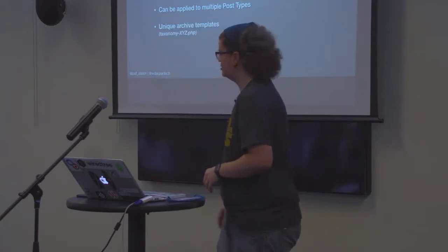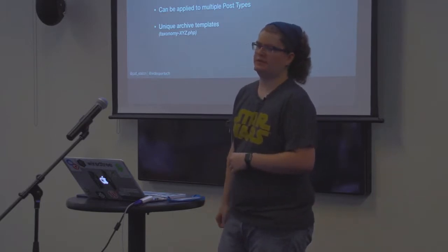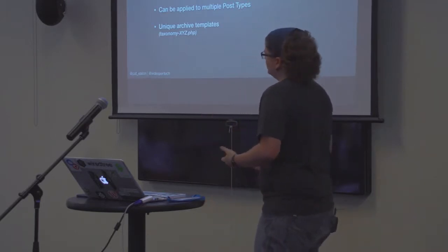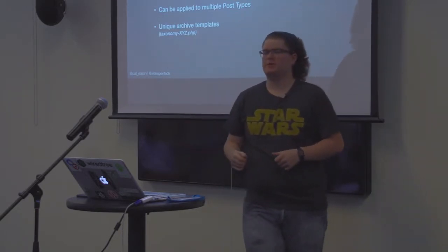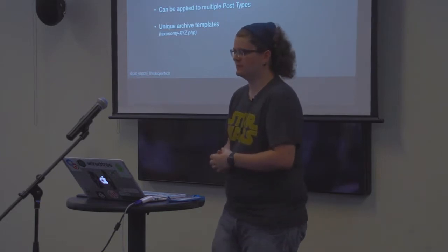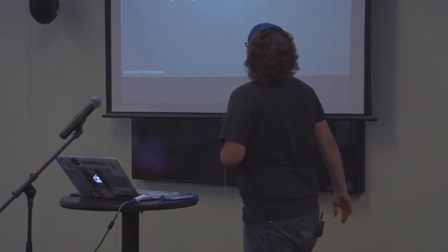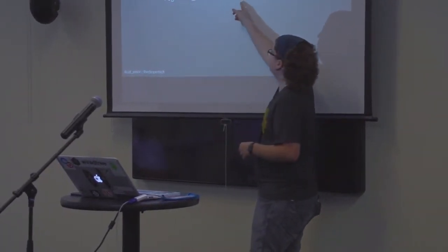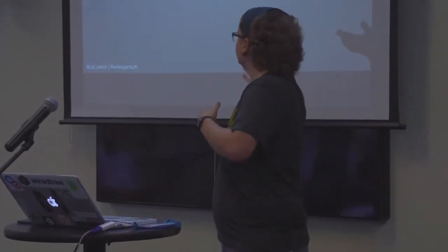Just like custom post types, unique archive templates are automatically detected once you create a taxonomy. So if we make breeds and have taxonomy-breeds.php in our theme, WordPress will automatically use that template when viewing that taxonomy's archive. Registering your taxonomy is easy — just register_taxonomy, call it 'breed', and make it unique to our post type 'dogs'. With that, the dogs post type would have a new taxonomy called breeds under it in the dashboard.